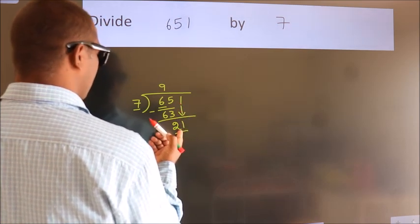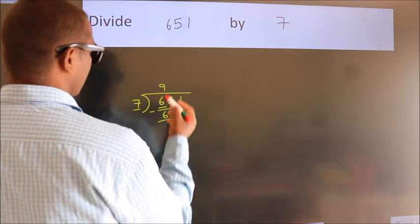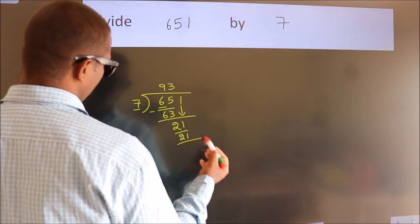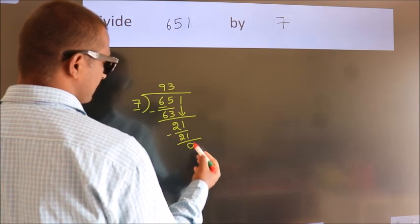When do we get 21 in 7 table? 7 threes, 21. Now we subtract, we get 0.